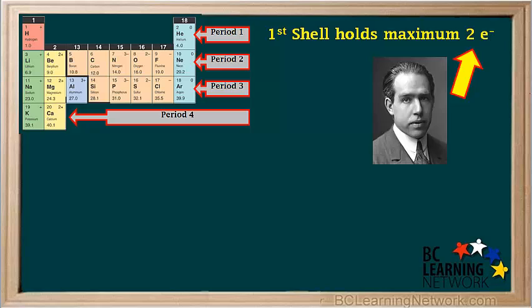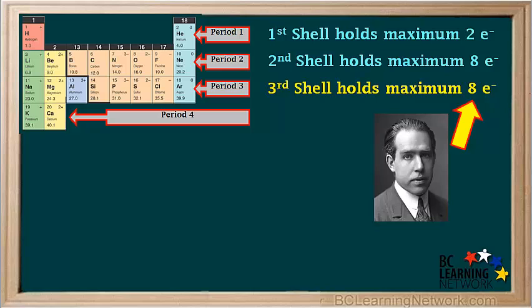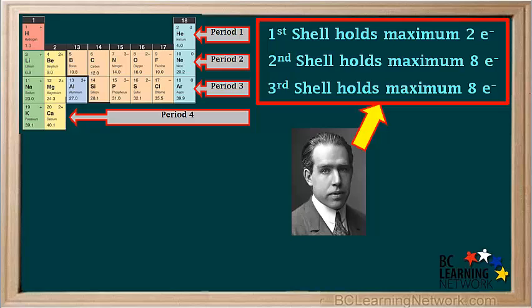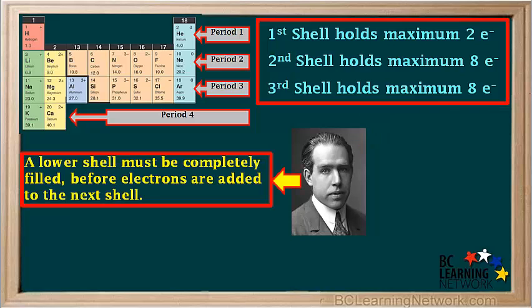Niels Bohr developed a simple set of rules for filling up shells with electrons. The first shell holds a maximum of two electrons, the second shell holds a maximum of eight electrons, and the third shell holds a maximum of eight electrons — at least in the model we're using. Bohr's actual model is much more complex, but this simple model works fine to explain electron arrangements in the first 20 elements. A lower shell must be completely filled before electrons can be added to the next shell.